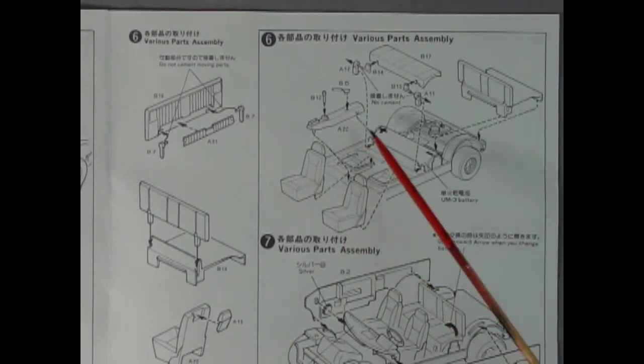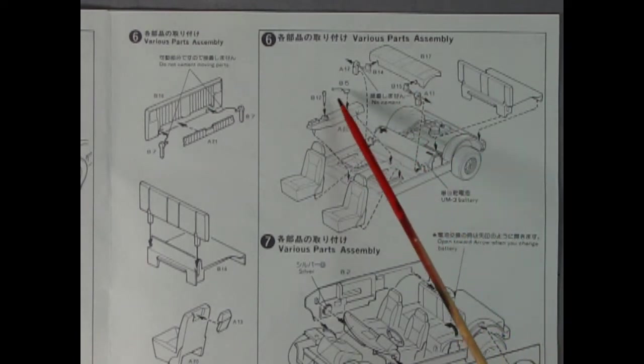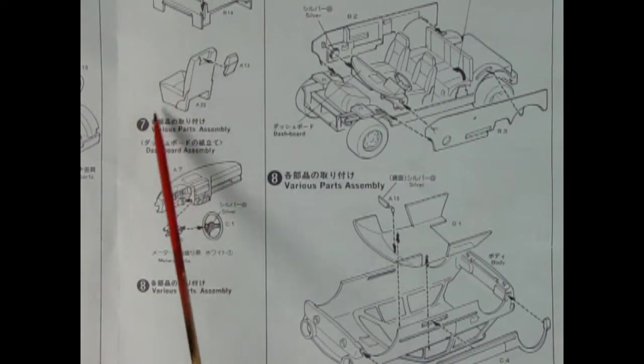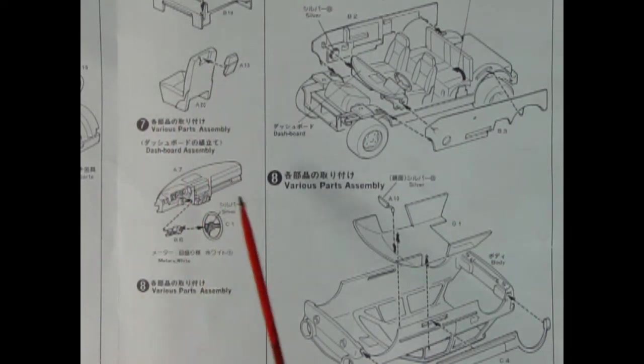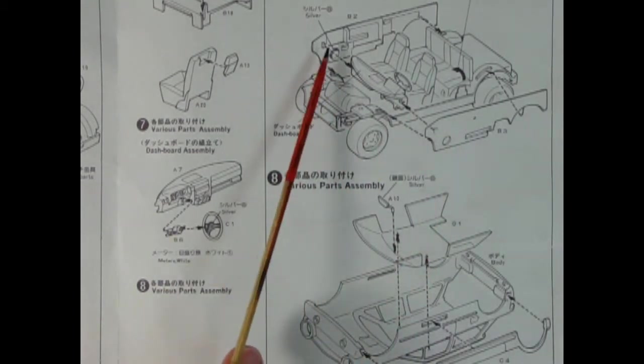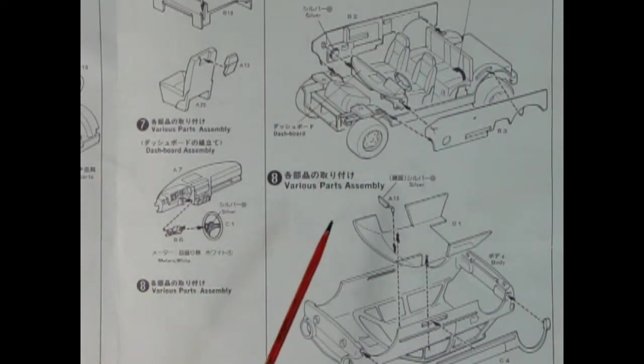We've got our bucket seats which will drop into place as well as our center console with our shift lever and parking brake. The model also includes these nice bucket seats with individual headrests, a dashboard with a steering column and separate steering wheel, and separately molded side panels so you can get in there and put in all the nice bare metal foil detail.